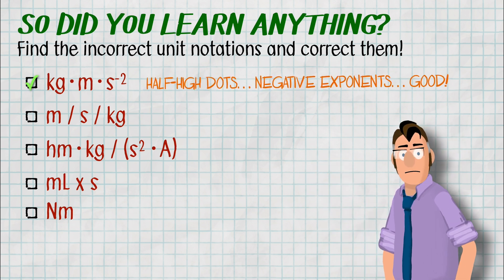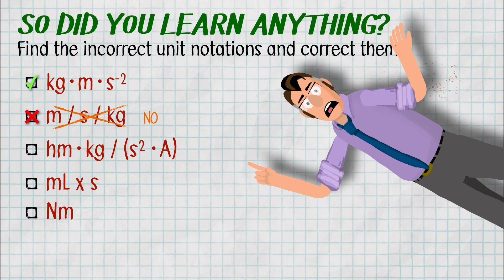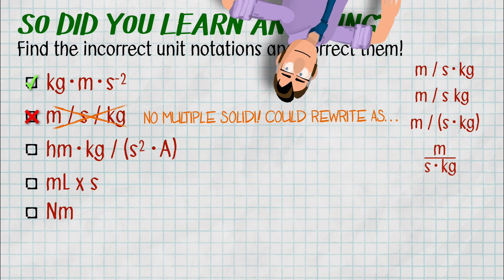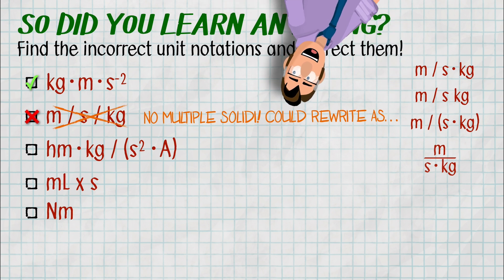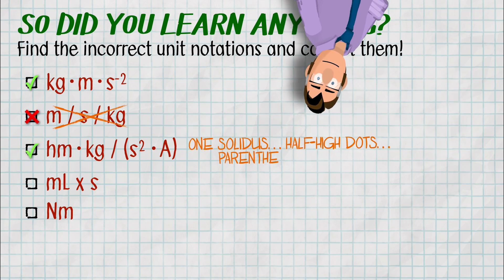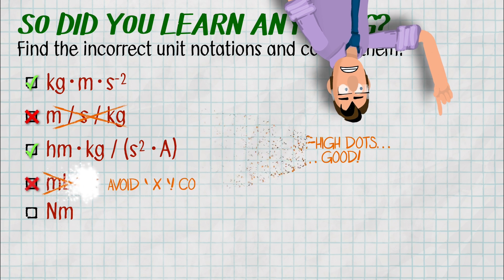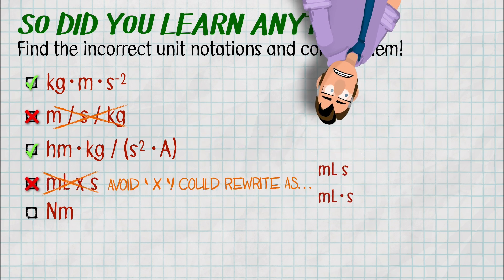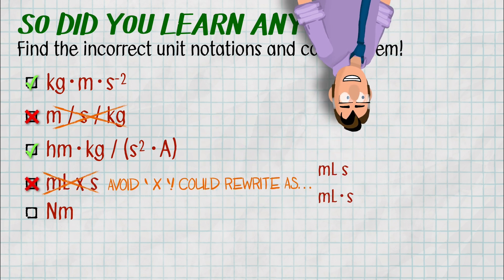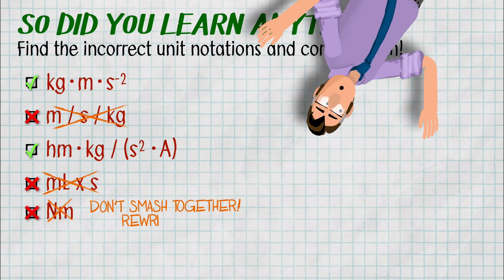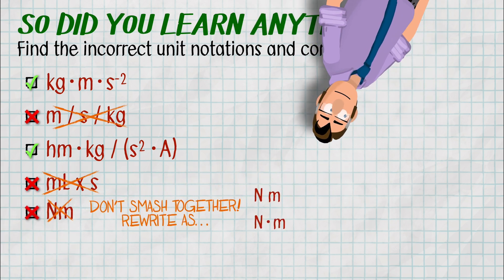The second one is a problem. We have multiple solidi. Now you could rewrite this several ways. I think every single one of these are legit ways to rewrite this. And I would obviously recommend the fractional notation if you have the space. The next one, we've got half high dots. We've got solidi. We've got parentheses. Great job. In the next one, we want to avoid the X. We don't use that anymore to separate units. And then finally, in the last one, those are smashed together. Let them breathe. Let them breathe a little bit. Either put that space or it's again, as I highly recommend, half high dots.